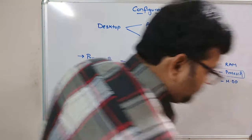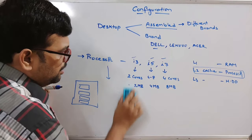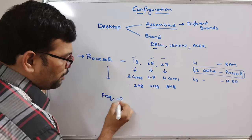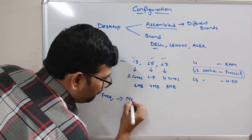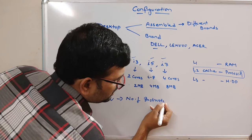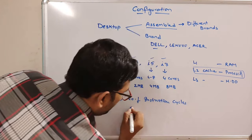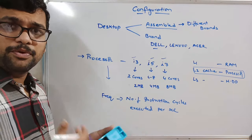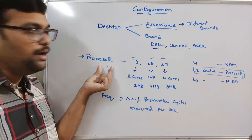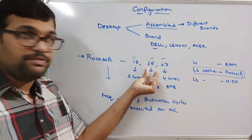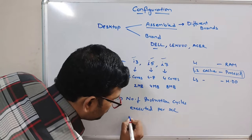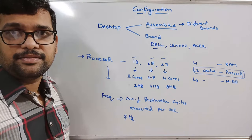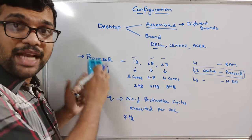One more comparison between processors is frequency — that means the number of instruction cycles executed per second. This also improves the speed. Each processor will have a different frequency, and the measurement of frequency is in Hertz: gigahertz, megahertz, and so on. So the first thing to select when configuring a system is the processor — whether you need i3, i5, or i7.